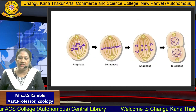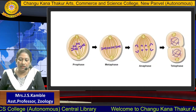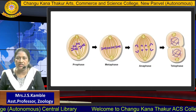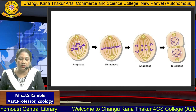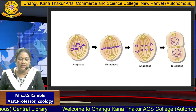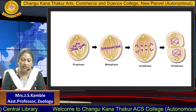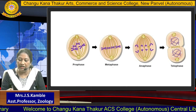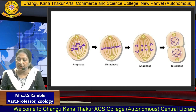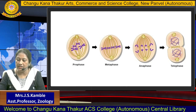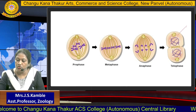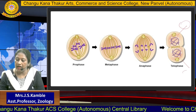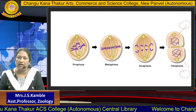So in this way, the process of mitosis is carried out. From a single cell, by passing through prophase, metaphase, anaphase, and telophase, two daughter cells are formed at the end of mitosis.